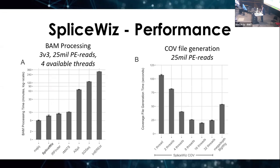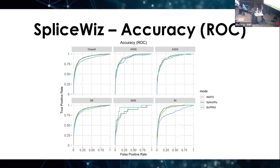We also benchmarked cov file generation compared with the fastest available utility for creating bigwig files on Bioconductor. Although it is slower on a single thread, it is multithreaded, and since it occurs simultaneously with BAM processing, the additional time is almost zero. For GLM-based differential analysis accuracy, benchmarking on simulated data shows SpliceWiz is at least as good as rMATS and superior to SUPPA2, two popular command line alternative splicing tools.